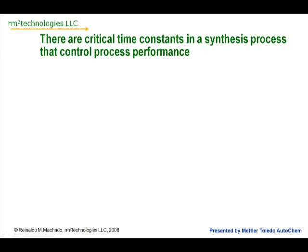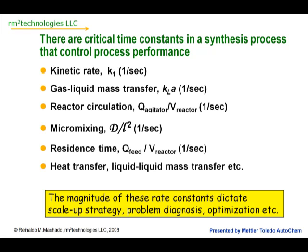There are a number of critical time constants that characterize a synthesis process. For example, the kinetic rate constant, which we're all familiar with, with units of one over seconds. In addition, we have the gas-liquid mass transfer coefficient, and the reaction circulation rate constant, which is the agitator pumping rate divided by the volume.